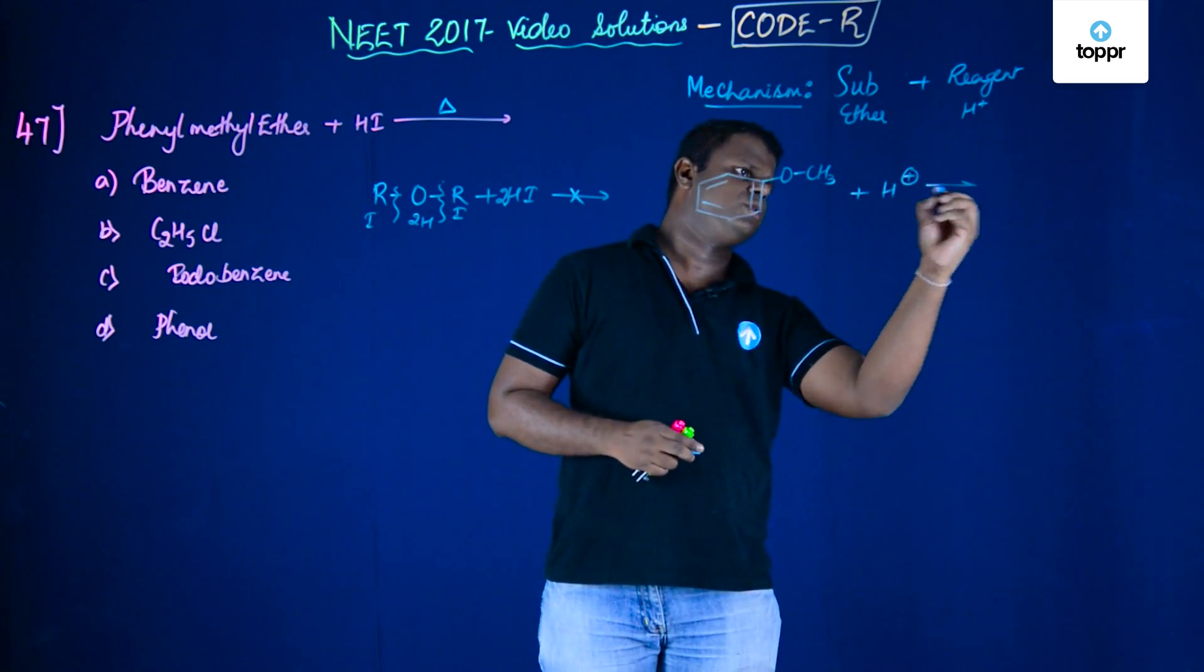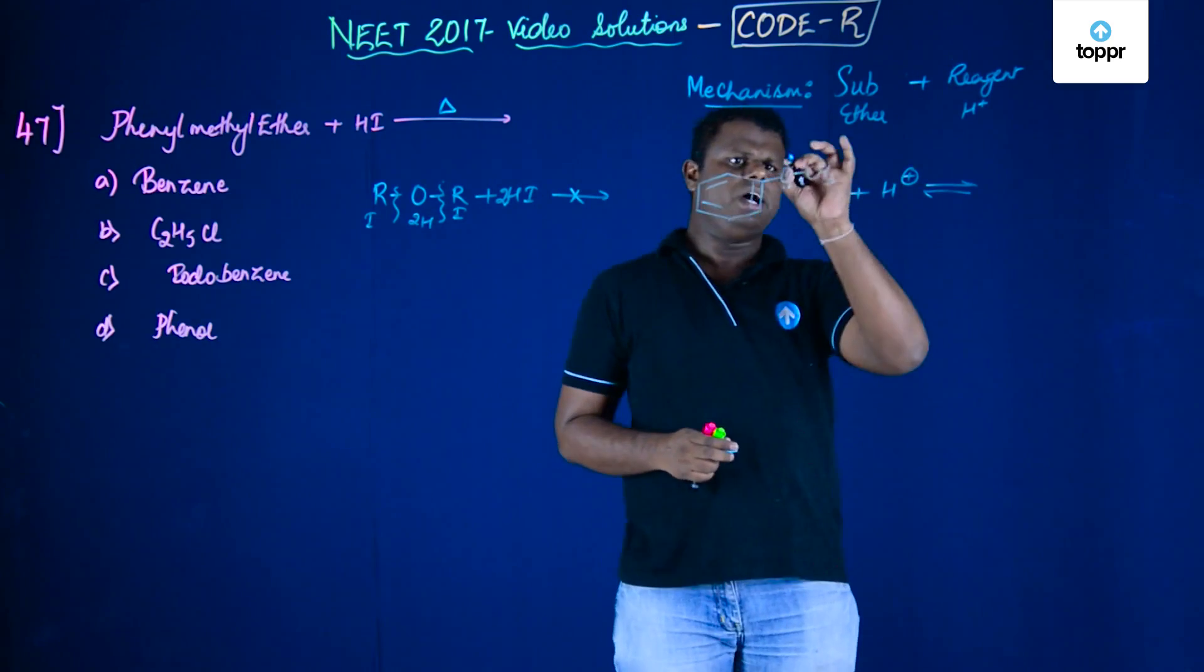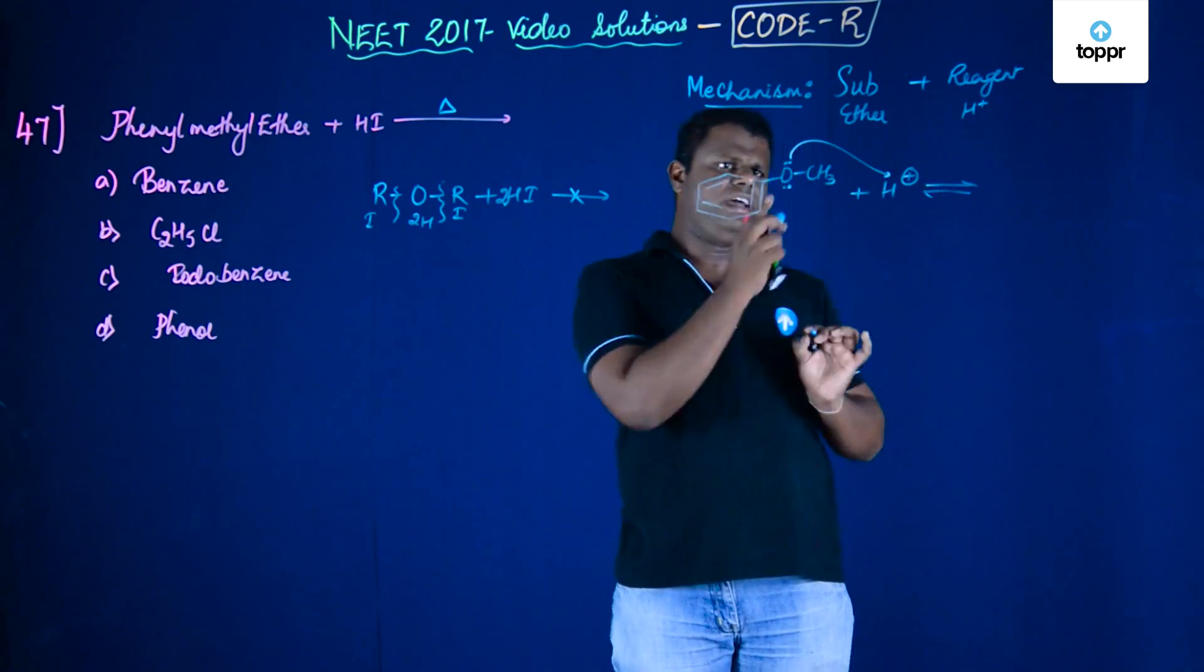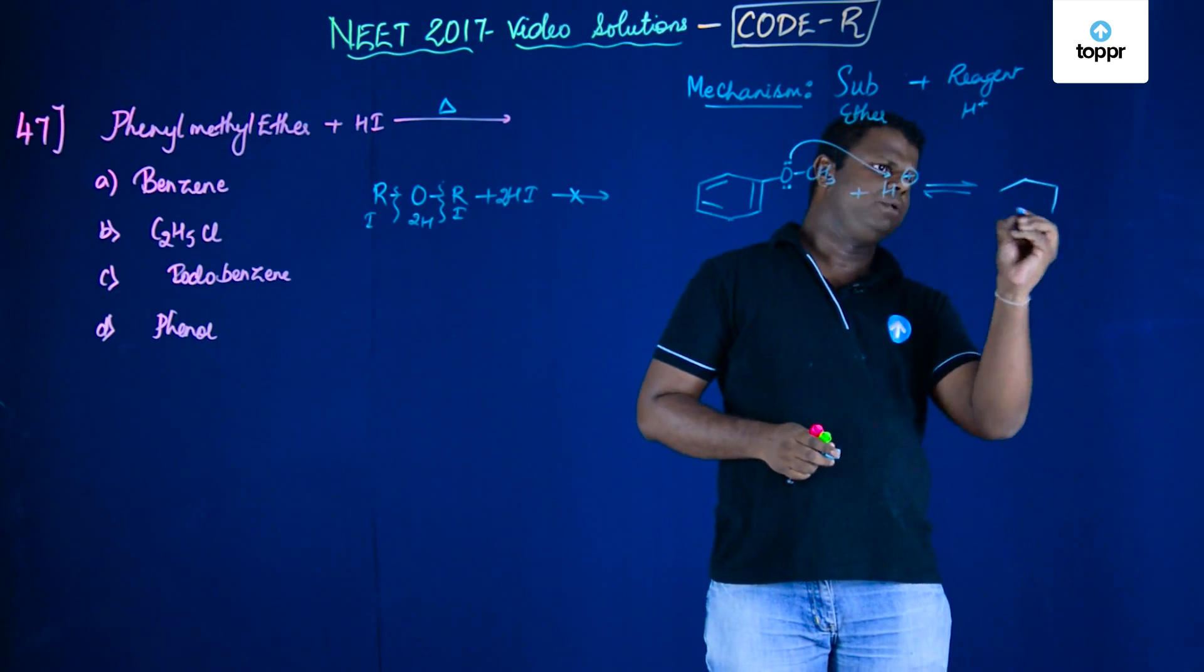This is nothing but anisol which is methyl phenyl ether and then this on protonation. Step number one is protonation. What exactly happens? See, oxygen has a lone pair. I'm just going to show the direction of electron shift from the donor to the acceptor. Finally you get a protonated anisol.